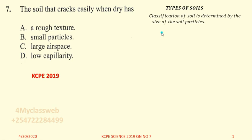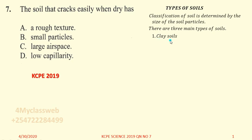We all know what soil is because that is what we normally step on. Soil is made up of particles — if you feel soil between your fingers, you'll find that some soils have large particles, others have small particles, and others have medium-size particles. Due to these different sizes, we can classify soil into three main types: clay soil, sandy soil, and loam soil.